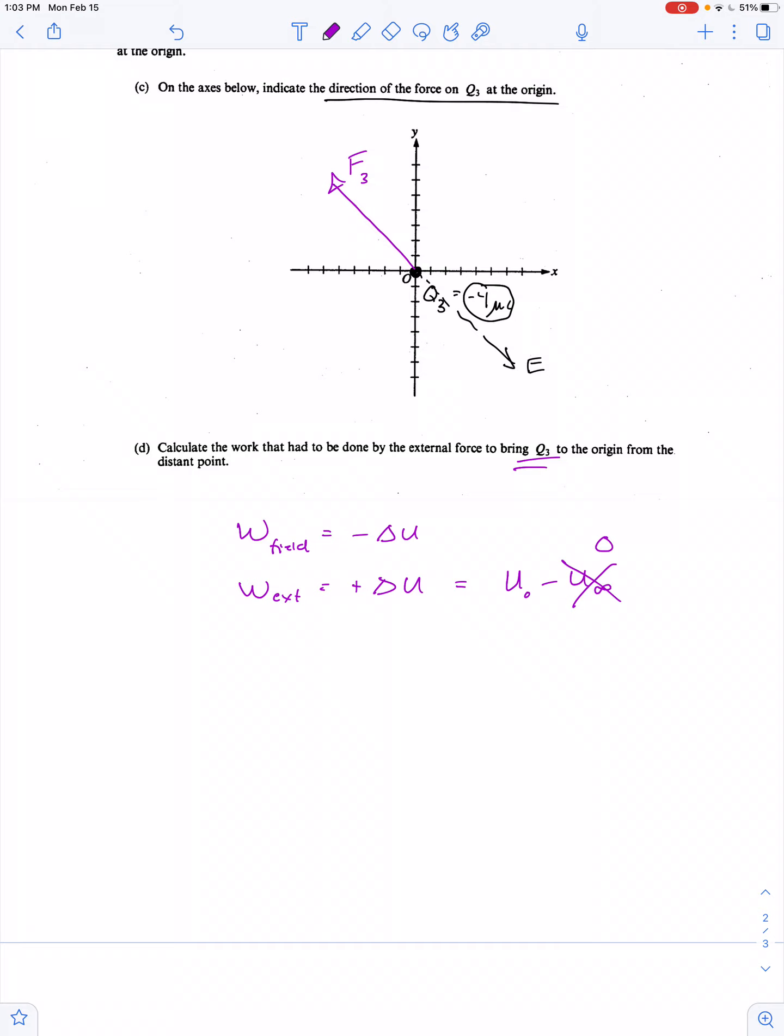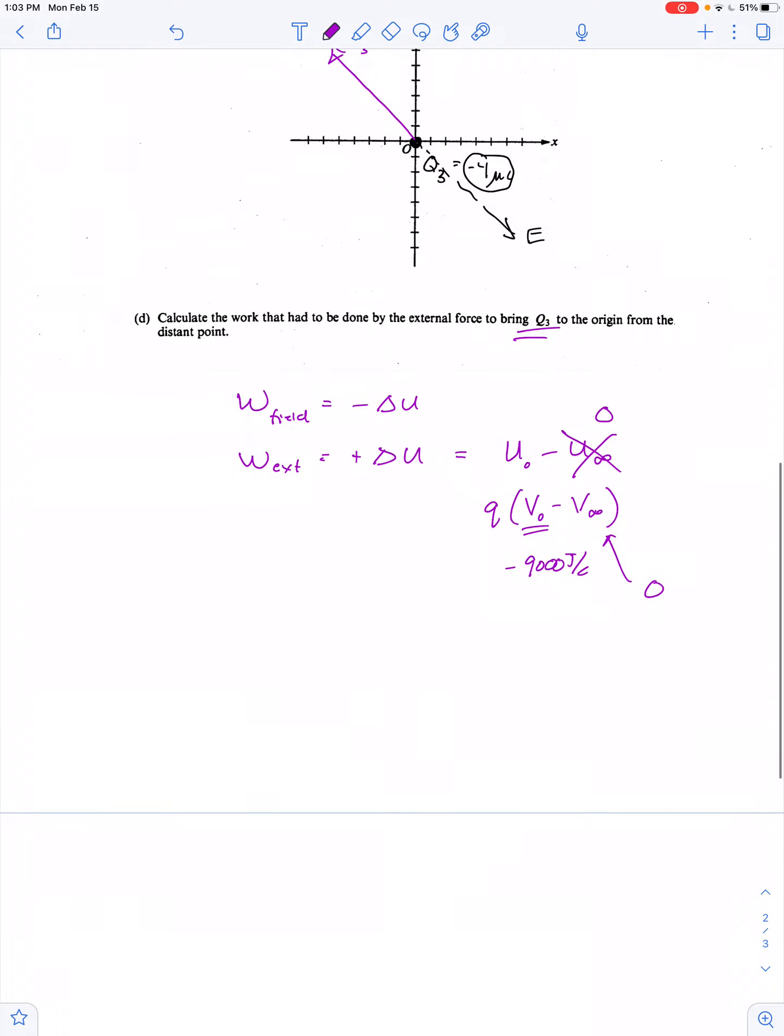Or we can say this is Q times the potential at the origin minus the potential infinitely far away. We've already calculated the potential at the origin is negative 9,000 joules per coulomb, and unless otherwise stated we always assume the electric potential infinitely far away is 0.